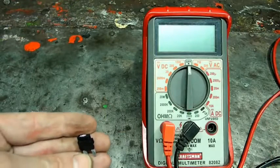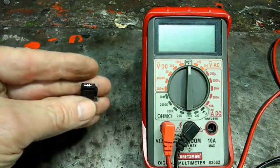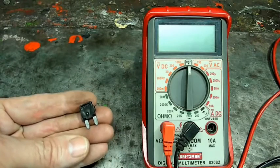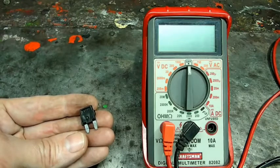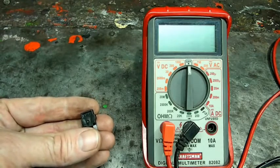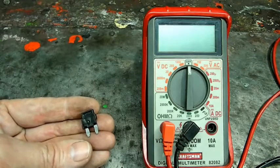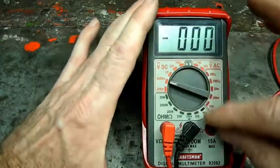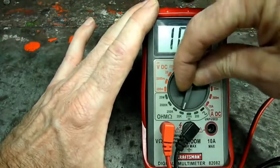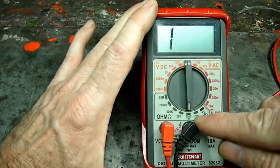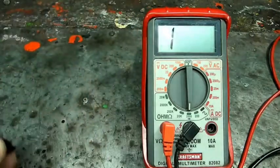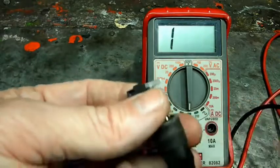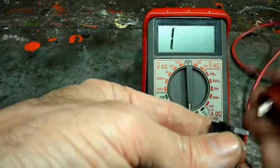Now the next thing we can check with our meter is one of these. It's a diode. Now what a diode is, it's basically a gate. It lets voltage go through one way but it will not let it go back the same way. So we're going to take the meter, go down here to the symbol that shows the diode, right there at 2000. And we'll take one end of the lead and take the other end.